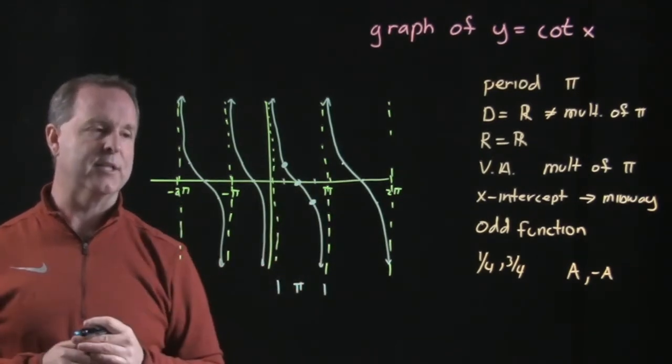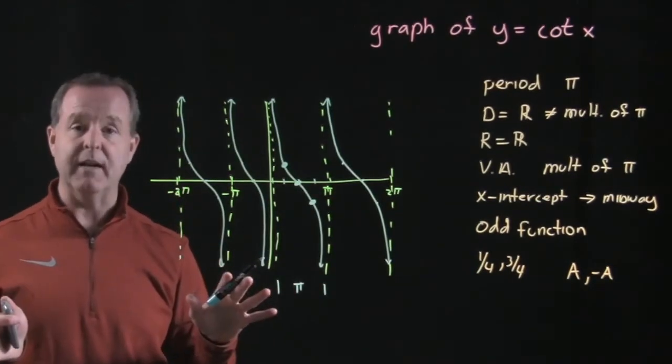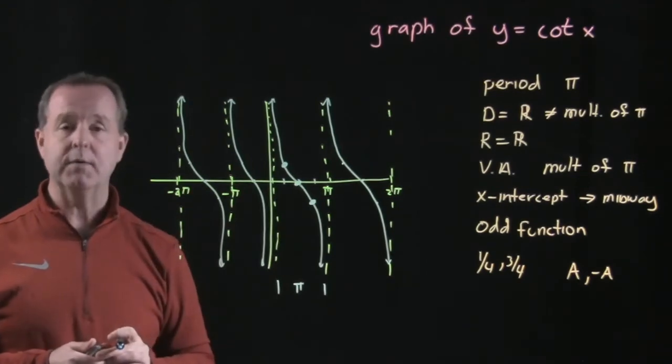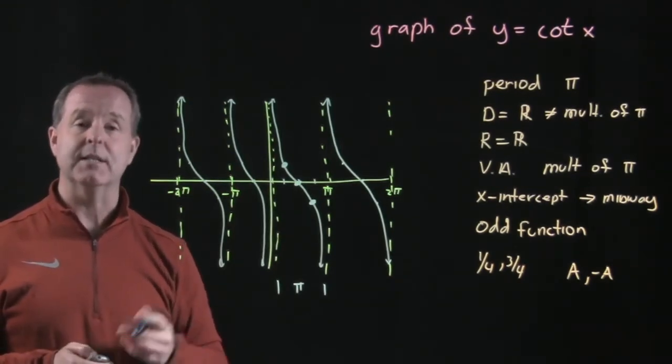It's the reverse of the tangent, and that's true across all of them as we go. So that's a little bit of an introduction of what the graph of cotangent looks like. Let's look at a couple of variations and see what variations of this graph can do.